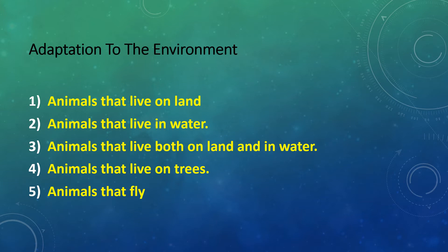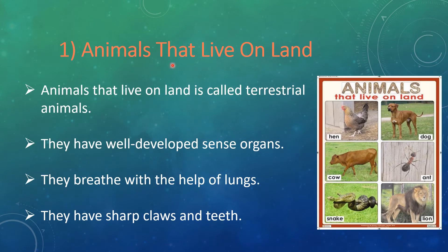We will discuss one by one. First, animals that live on land are called terrestrial animals. Here I have displayed some terrestrial animal pictures: hen, dog, cow, ant, snake, and lion, etc. So many animals live on land.